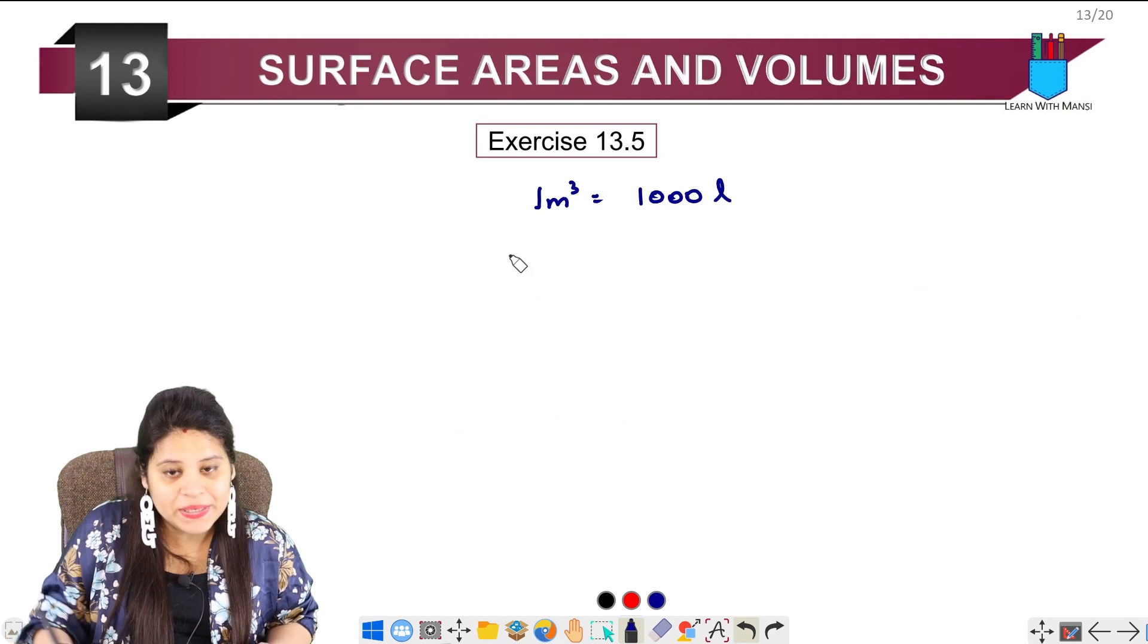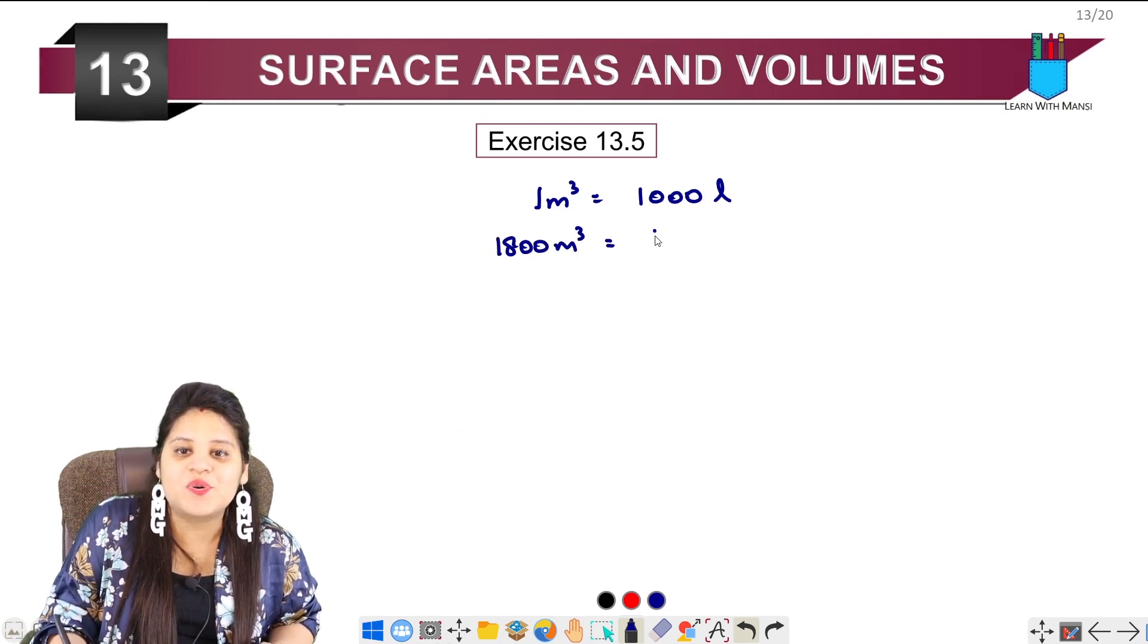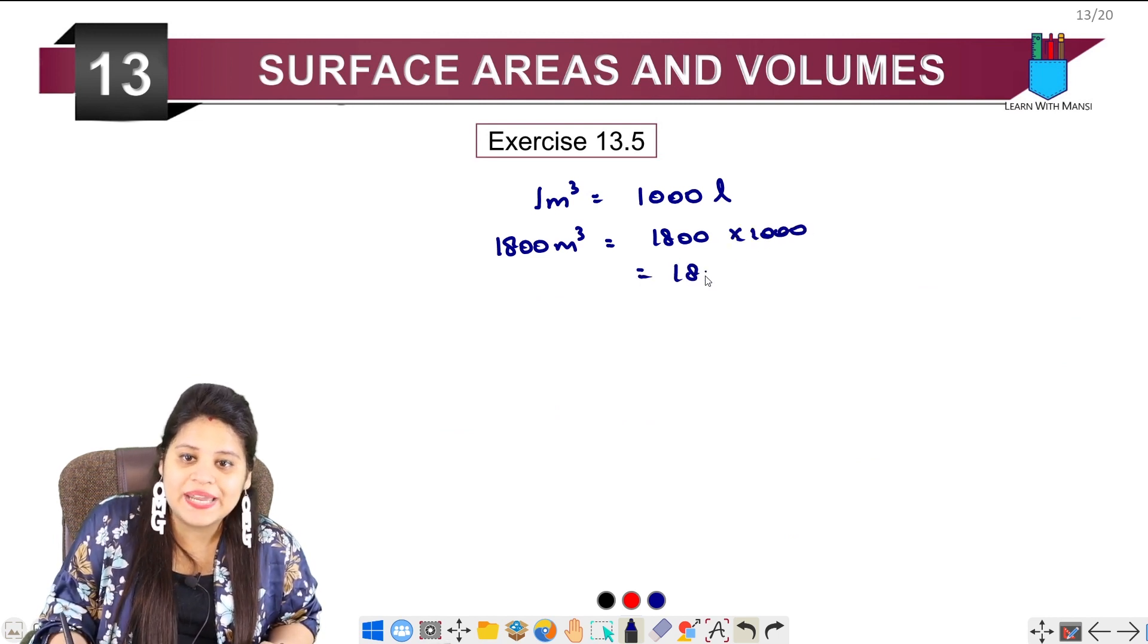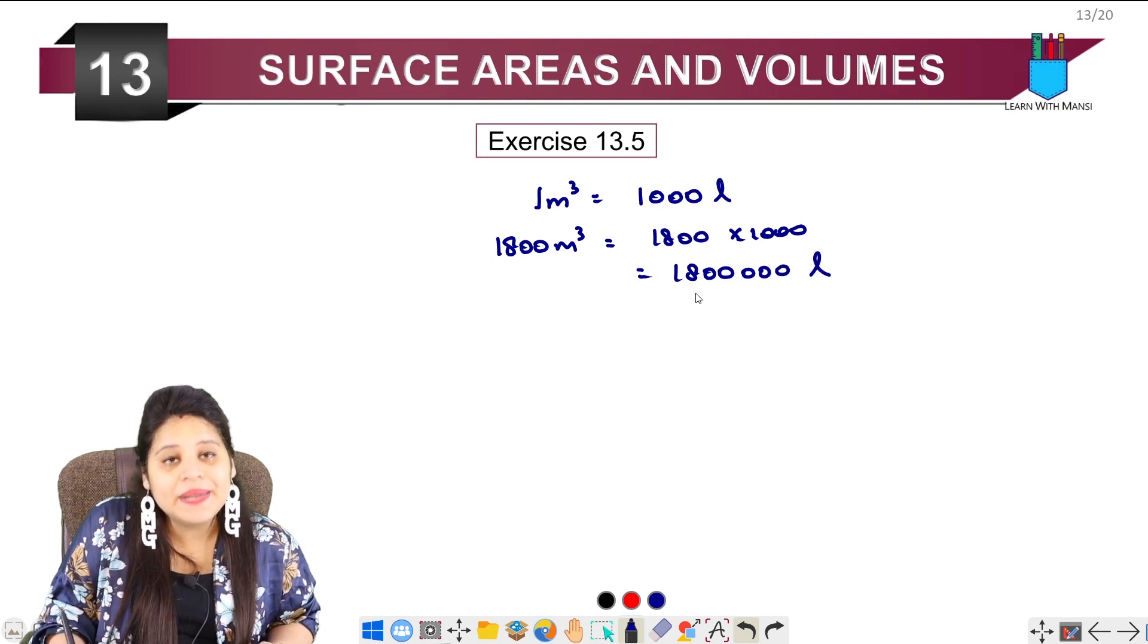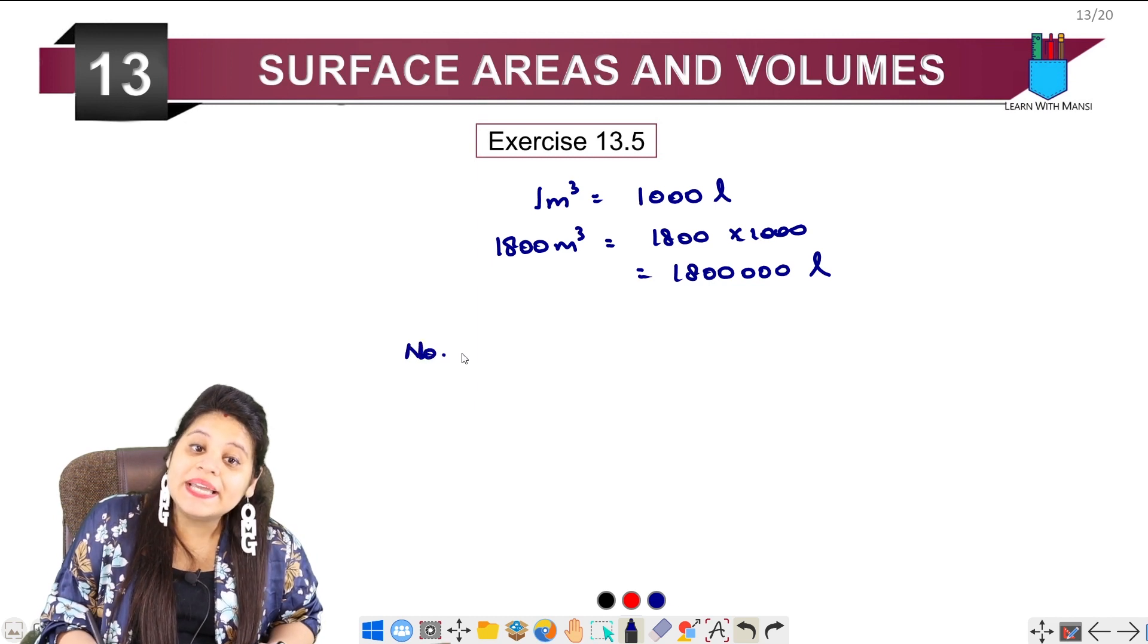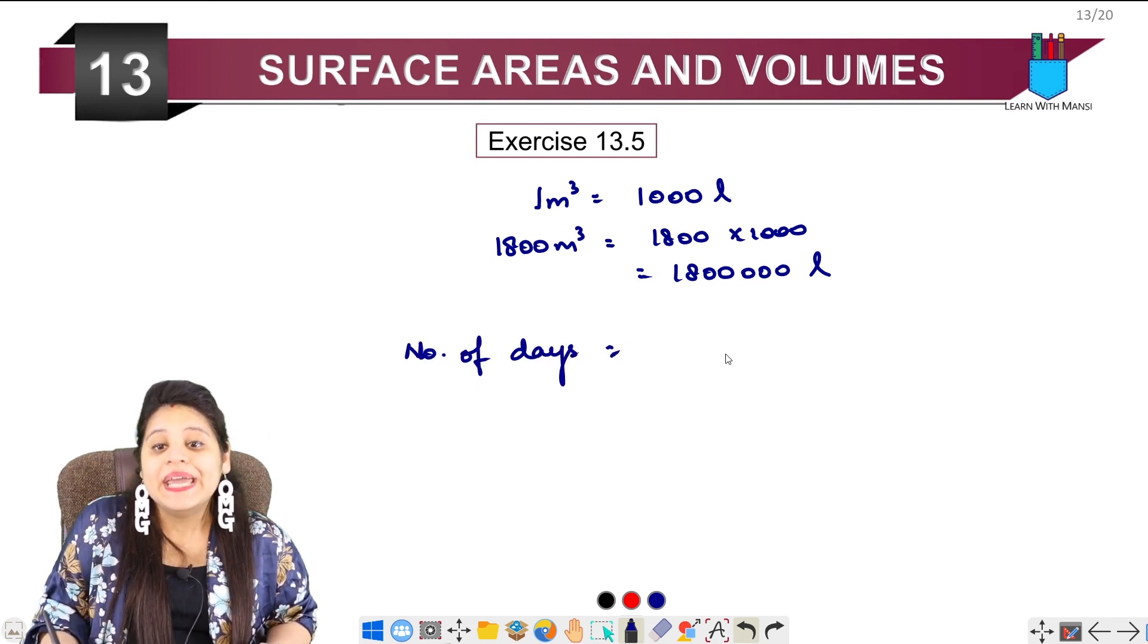We have 1,800 meter cube, so 1,800 meter cube is going to be 1,800 into 1,000 which is 18 lakh liters. That means that in a tank there is so much water. If we want to see how many days will it go, so let's see how many days will it go.